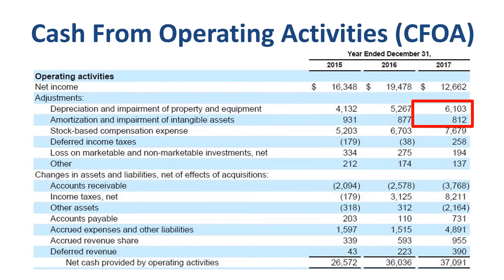First off, you add back depreciation and amortization. This number was deducted as a cost when net income was calculated in the profit and loss statement, but as you do not pay depreciation and amortization to anybody, you have to add back the amount to get to a cash flow based view. Similar story for stock-based compensation expense — this is a cost in the income statement which lowers net income, but as the compensation is stock-based and not cash-based, no cash is leaving the door, so you need to add back this number.